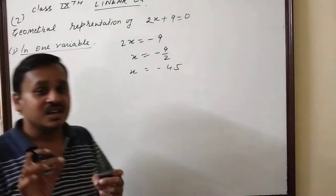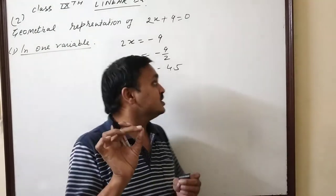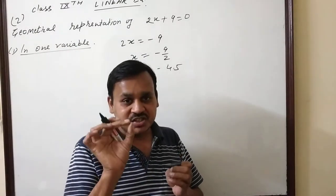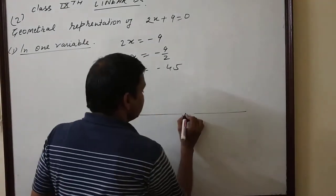Now let's see how to represent this on the number line. We'll draw a theoretical representation on the number line for -4.5.